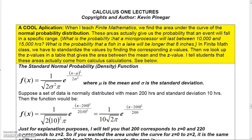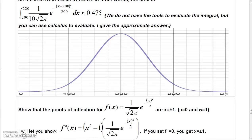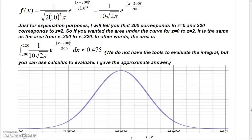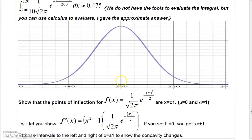In statistics, the normal probability distribution is used to find the probability that an event falls within a specific range. This function looks like a bell curve. Given a mean and standard deviation, you can look up a table — or you could find the area under the curve between two values, say 200 and 220.